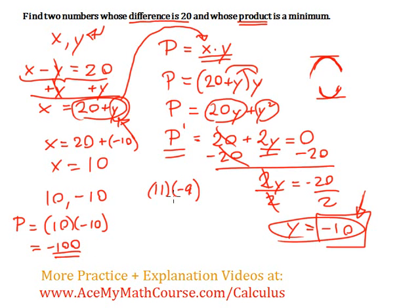Now I'm just testing to make sure that negative 10 and 10 actually give me the minimum product of numbers with a difference of 20. So 11 times negative 9 is negative 99. That is higher than negative 100. So, so far, so good.